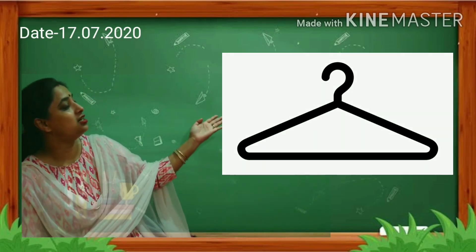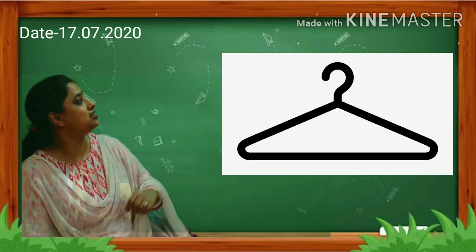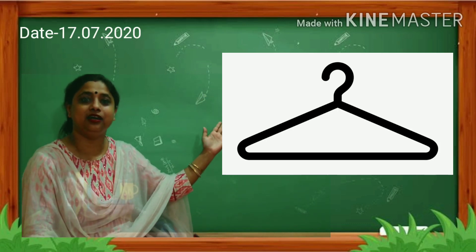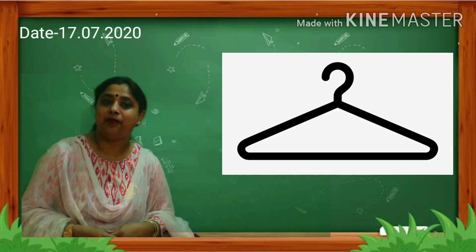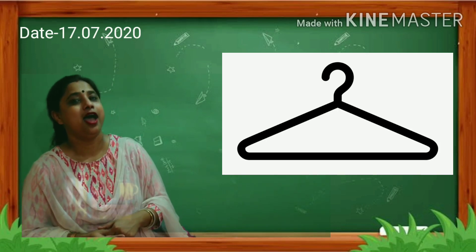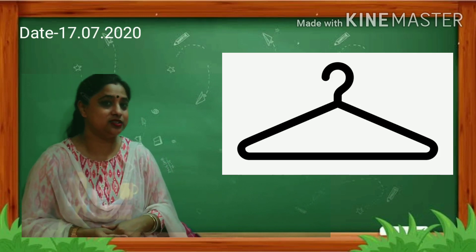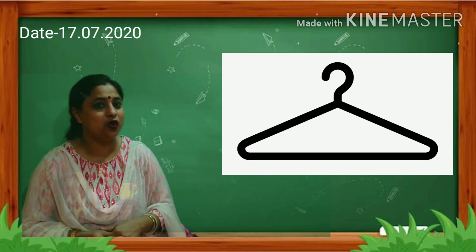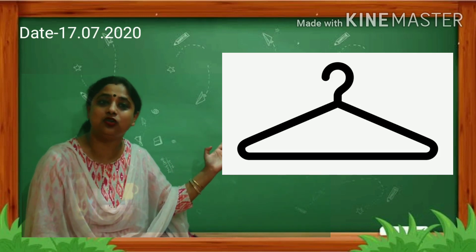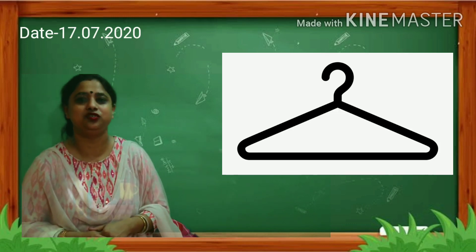What is this? This is a hanger. Mama hangs your clothes on the hanger and the hanger is also triangle in shape.